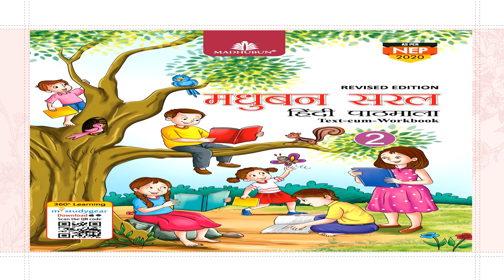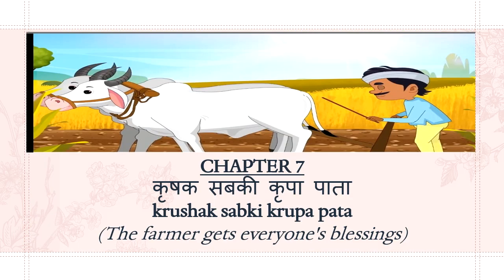Hello all, in this video we will discuss chapter 7 of Madhuban Saral Hindi Patmala CBC textbook for class 2. Chapter 7 is Krishak Sabki Kripa Pata — meaning the farmer gets everyone's blessing. Let's move on to the discussion of the chapter.